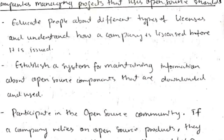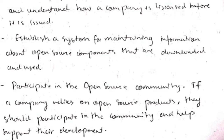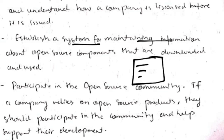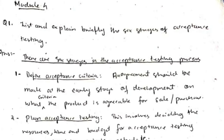Rules for companies managing projects using open source: first, educate people about the different types of licenses and how the company license should be used. Second, establish a system for implementing and documenting information about the source code being used. Third, participate in the open source community.